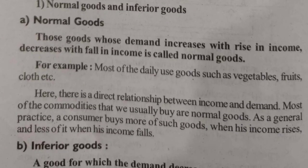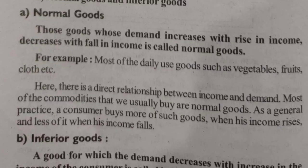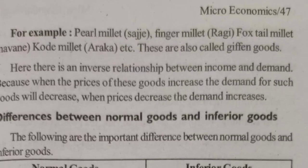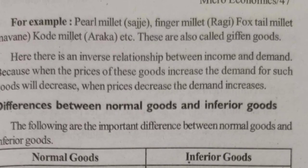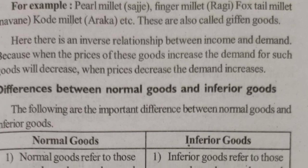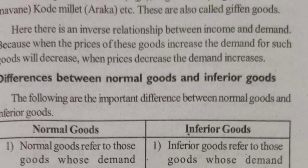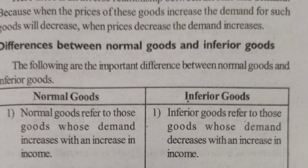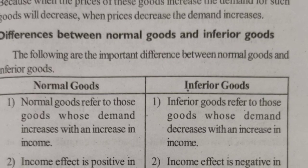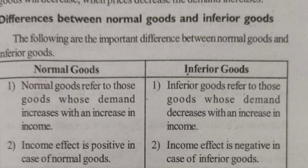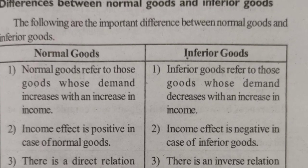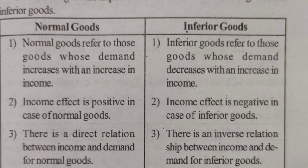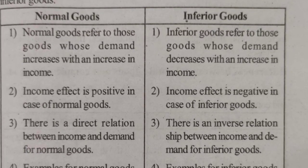Inferior goods are goods for which demand decreases with an increase in the consumer's income. So demand will decrease when income increases — these are called inferior goods. There is a difference between normal and inferior goods which you need to read; it is quite straightforward.